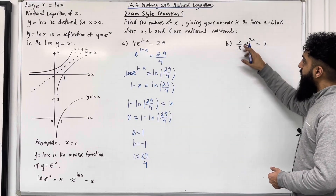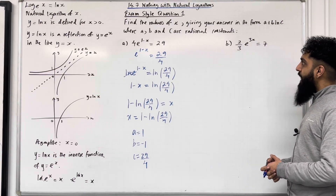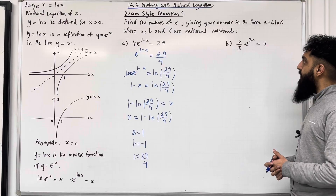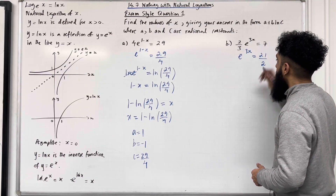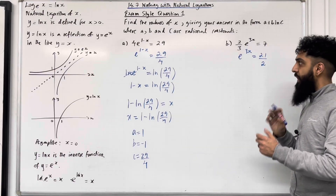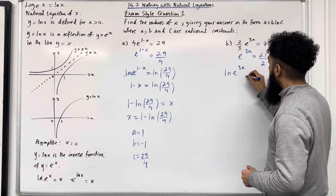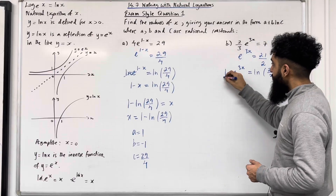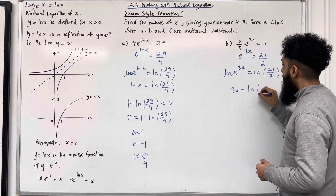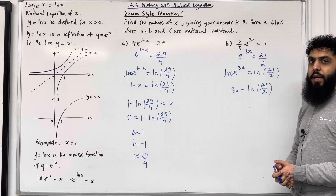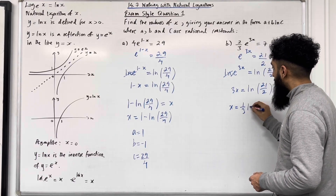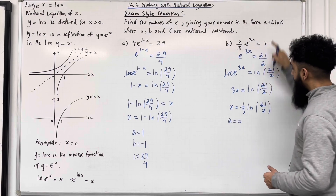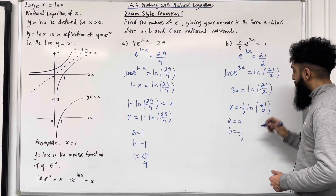Part b: (2/3)e^(3x) = 7. I need to get rid of the number in front of the e: multiply 7 by 3 to get 21, then divide by 2, giving 21/2. So e^(3x) = 21/2. Applying natural logarithms on both sides: ln(e^(3x)) = ln(21/2). The ln and e cancel out, reducing the equation to 3x = ln(21/2). Dividing by 3: x = (1/3)·ln(21/2). Here a = 0, b = 1/3, and c = 21/2. That completes exam style question 1.